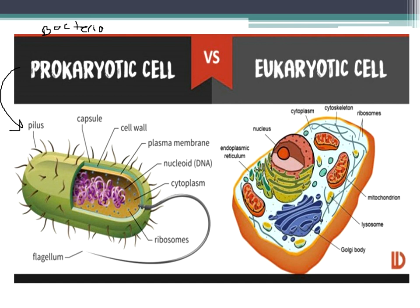After a few more million years of evolution, you got your eukaryotic cell. These are more advanced. They're bigger. They have more to them. They can grow into larger organisms. The eukaryotic includes plants, animal cells, and also fungus.